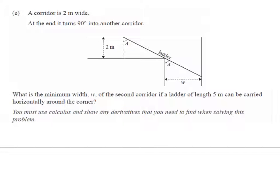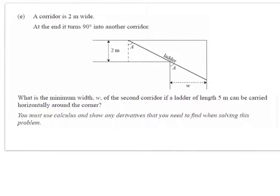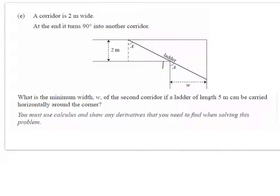Alright, this is the problem and they give you a very nice diagram which is going to make it quite doable. A corridor is 2 meters wide and at the end it turns 90 degrees into another corridor. So here's the 90 degree angle there. What's the minimum width, W, of the second corridor if a ladder of length 5 meters can be carried horizontally around the corner?